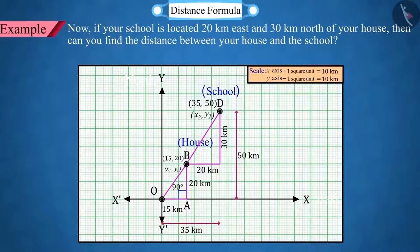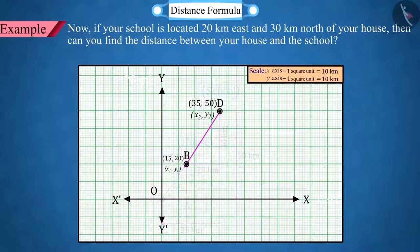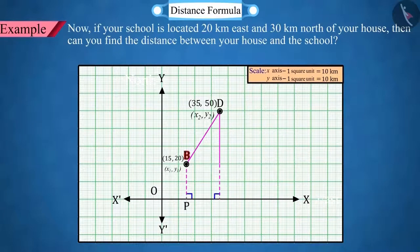Since now we have to find the distance between these two points, that is point B and point D, we draw the perpendiculars BP and DQ from the points B and D respectively on the x-axis. And also, let's draw another perpendicular from the point B on DQ, which intersects DQ at the point R.